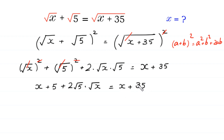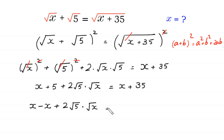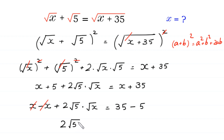We move x to the left side and 5 to the right side. The positive x and negative x cancel, leaving 2√5·√x on the left equal to 35 − 5, which is 30.